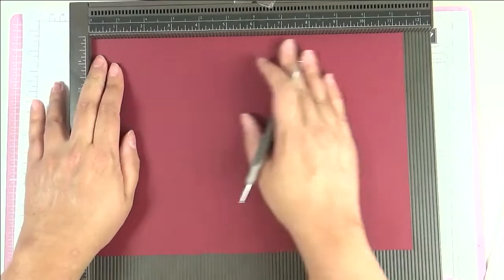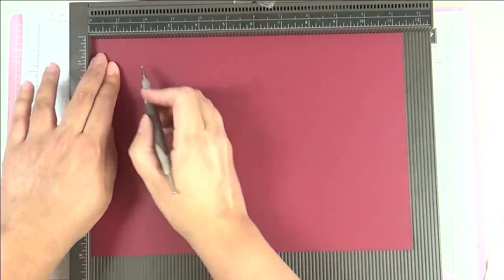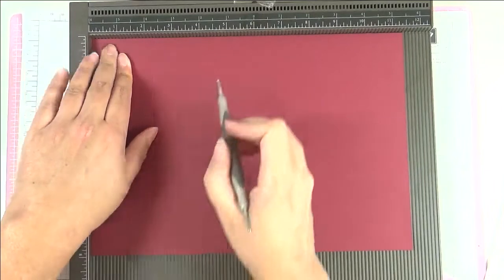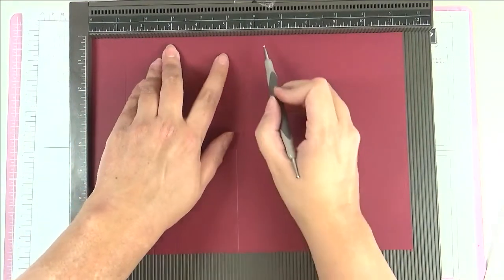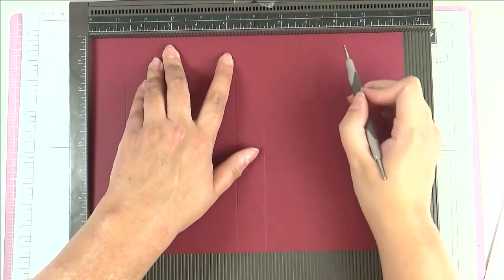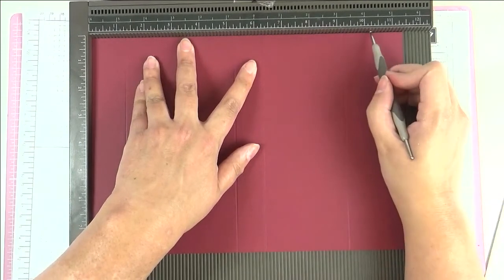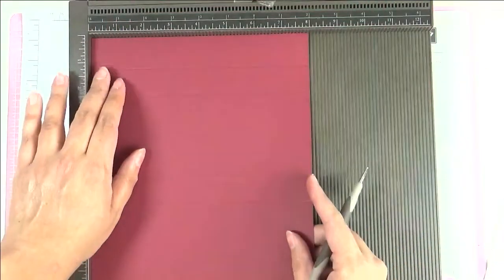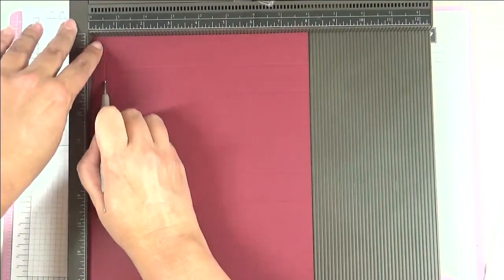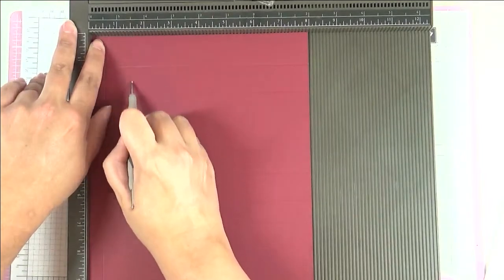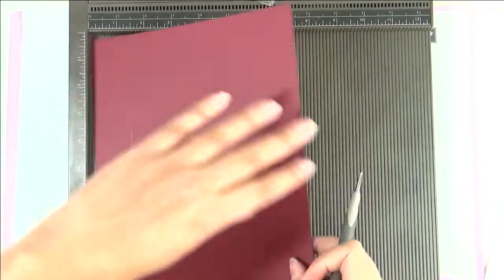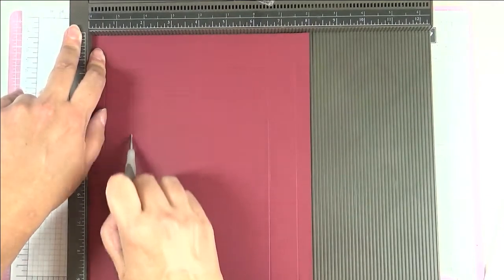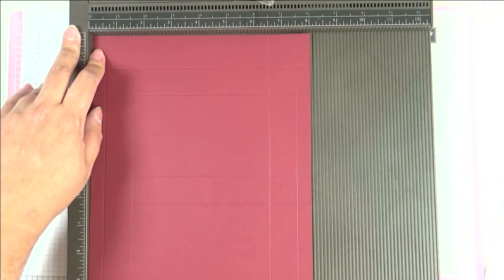On the long side, the landscape mode, we are going to score at 1 and a quarter inches, 2 and a quarter inches, 5 and a quarter inches, 6 and a quarter inches, 9 and a quarter inches, and then 10 and a quarter inches. Turn it to the short side and I am going to score at half an inch and at 1 and a half inches, and then I'm going to turn it around 180 degrees so I'm still on the short side but the other side, and again at half and at 1 and a half.